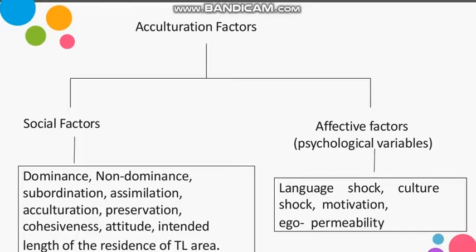We have some difficult terms but we will discuss them. We also have affective factors, which we call psychological variables. These are different from social factors in that they are not a product of society but psychologically affect your mind. Some of these links are associated with social factors, but their psychological effect is more prominent. Now let's start with the social factors.